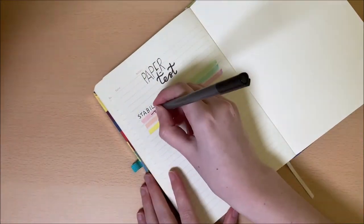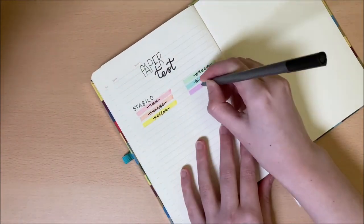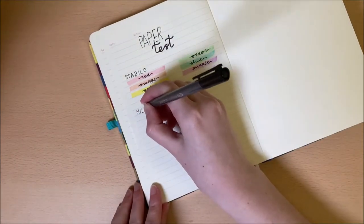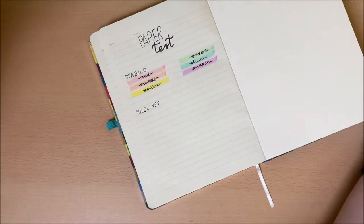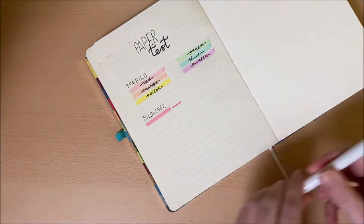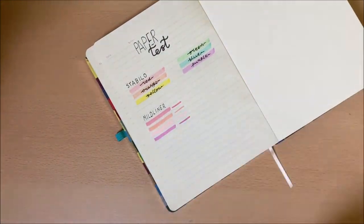So my usual highlighters are the Stabilo Pastel as well as Mildliners. You'll see later the Stabilo actually ended up being better for this type of paper so that is what I used to highlight each spread.